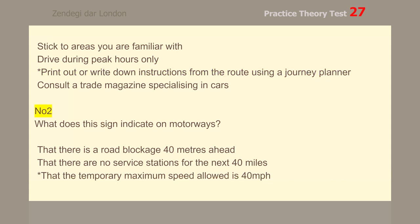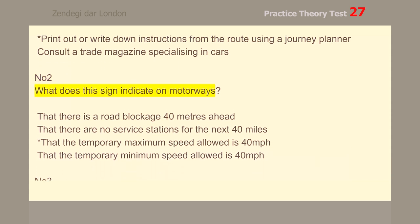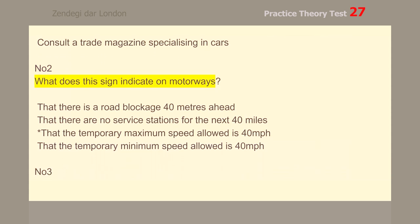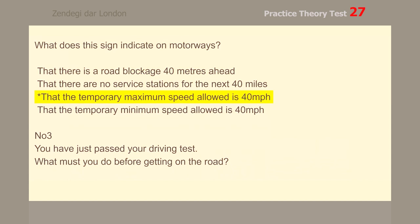Number 2. What does this sign indicate on motorways? That the temporary maximum speed allowed is 40 mph.